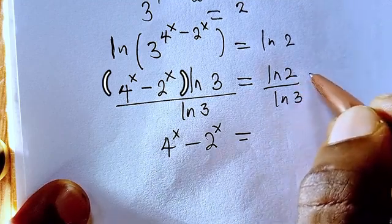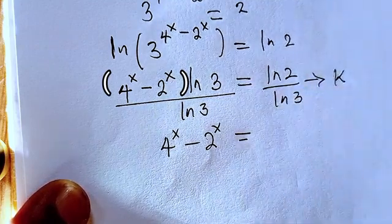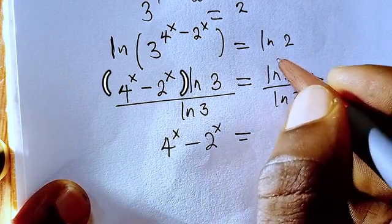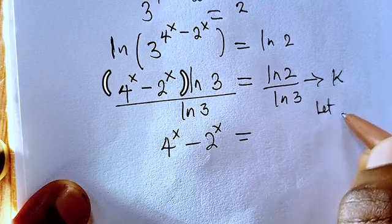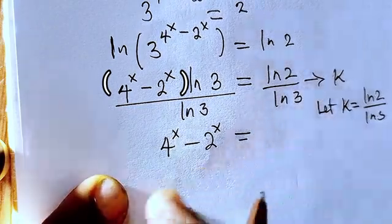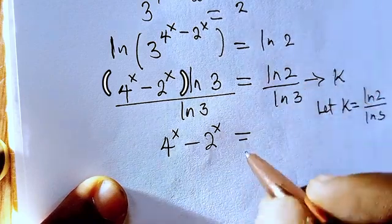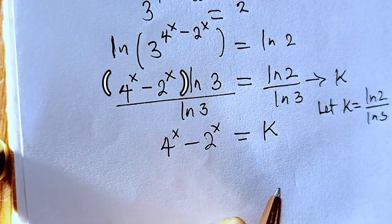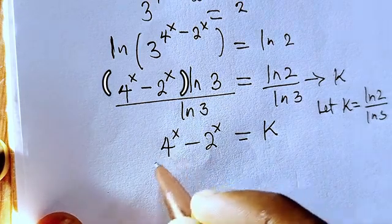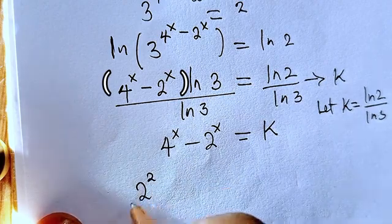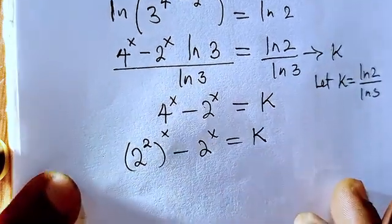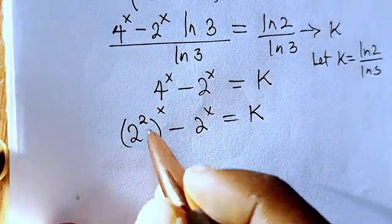We denote the constant k = ln 2 / ln 3 for simplicity, so wherever we see k we replace it with that value. We rewrite 4^x as 2 to the power of 2 to the power of x, giving 2^(2x) minus 2^x equals k.